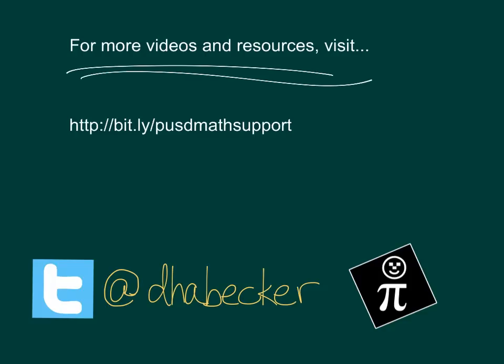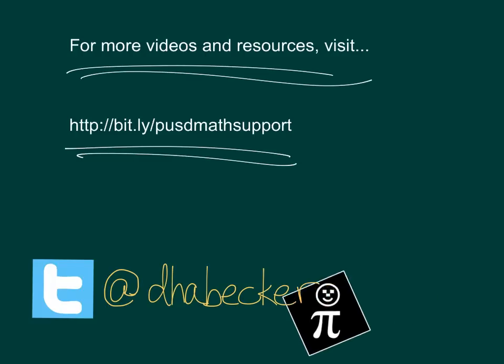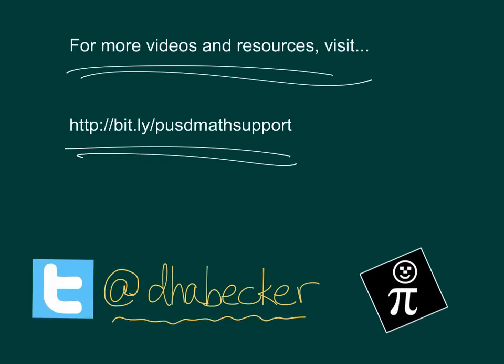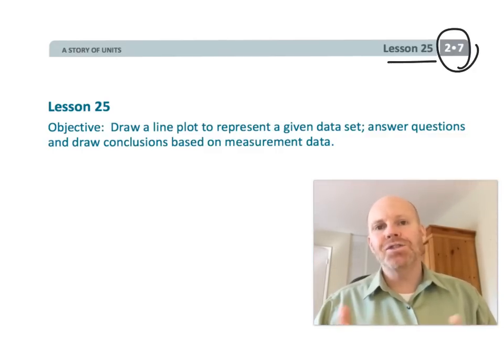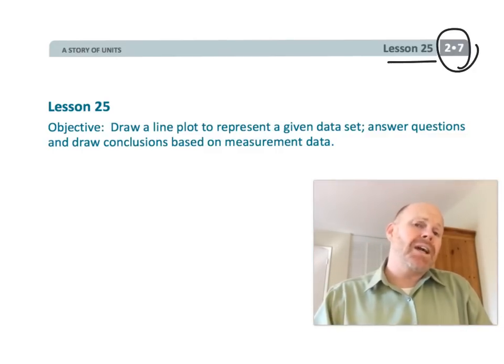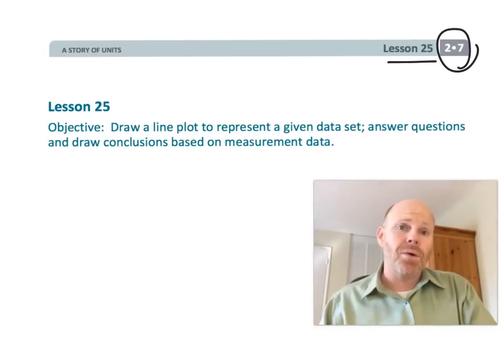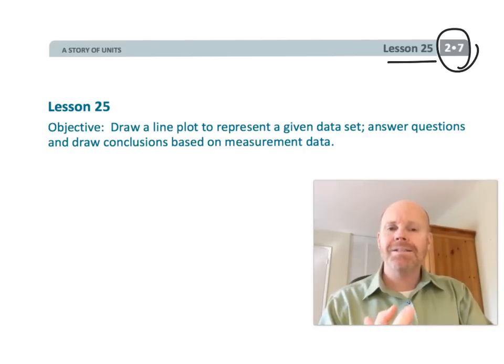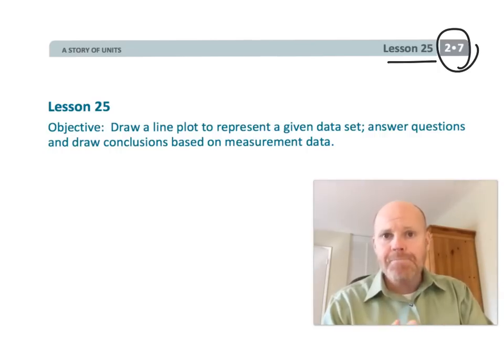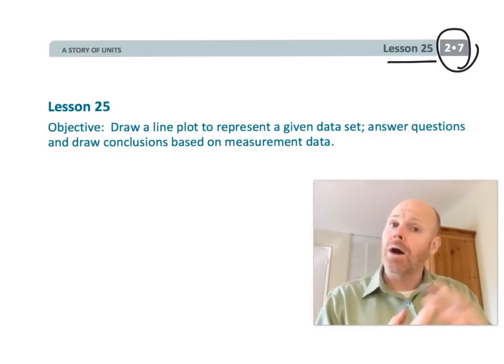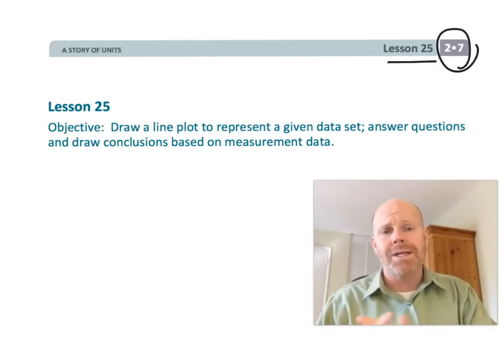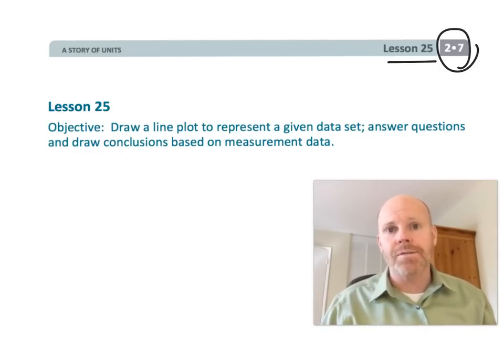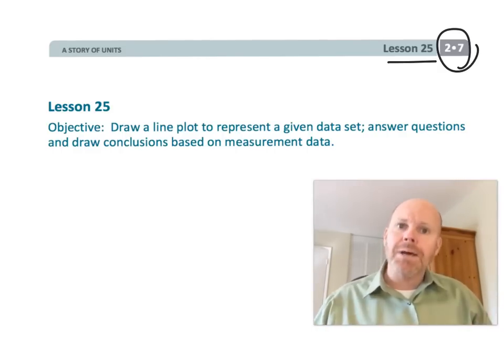This is second grade module 7 lesson 25. This lesson is really kind of more of the same as lesson 24, where students are going to be taking measurement data and then representing it on a line plot. The difference from this video versus the previous one in 24 is that there's just less scaffolding the students have been given. They're going to be expected to do more on their own as they make their line plots.